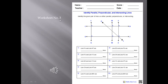For worksheet number 3, you have to identify the given pairs of lines whether they are parallel, perpendicular or intersecting. Accordingly, you have to fill in the blanks mentioned below the figure.